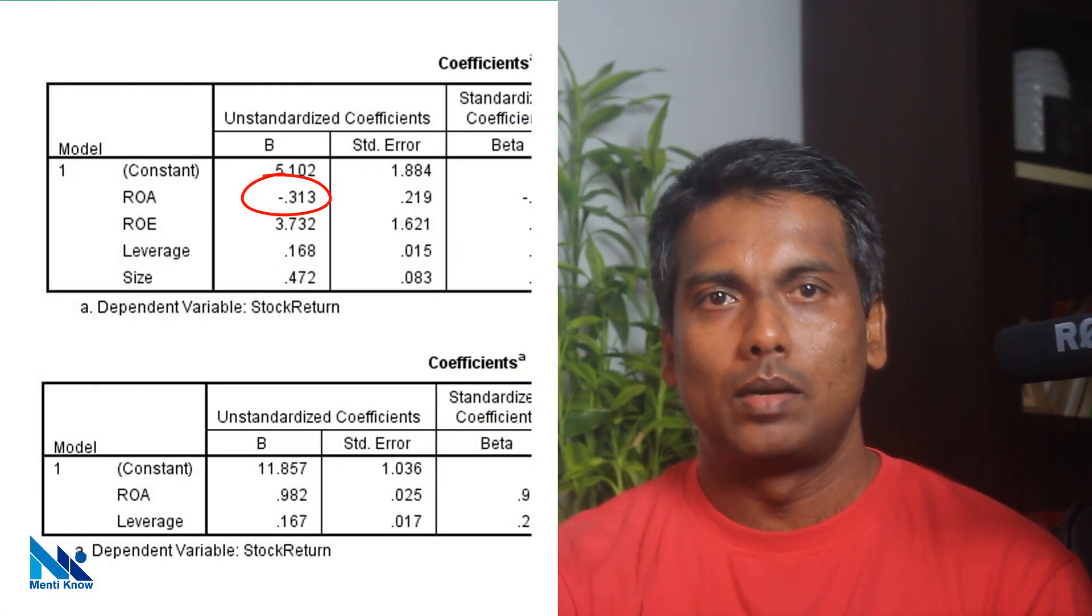Importantly, when multicollinearity is present, a slightly different model may yield drastically different results. For example, you may get a negative coefficient for a particular independent variable in one model and a positive coefficient for the same independent variable in a slightly different model.